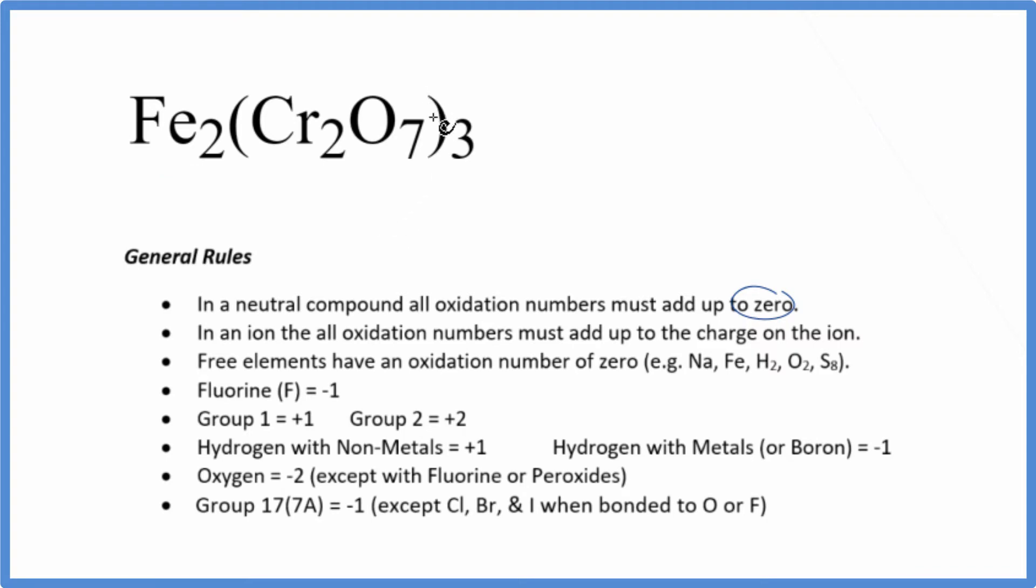The trick is that the chromium is in what we call the dichromate ion, really one you just have to memorize. This whole dichromate ion has an ionic charge of two minus. And we know if we have an ion, all the oxidation numbers add up to the charge on the ion.